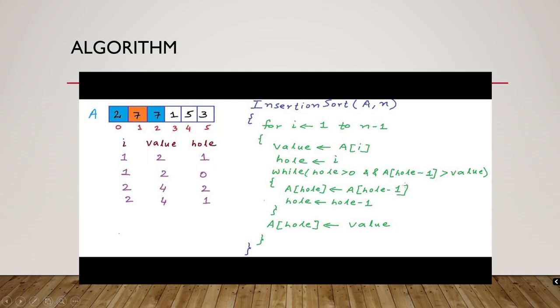Now you can see the function. I have given the function name as insertion sort. I have passed two arguments to it. You can see I have passed A and as well as n. For every i, for every i equal to 1 to n minus 1, I have to change this value, that is value to be A of i and hole to be i.